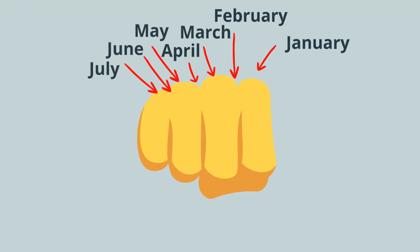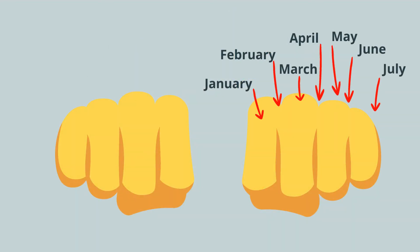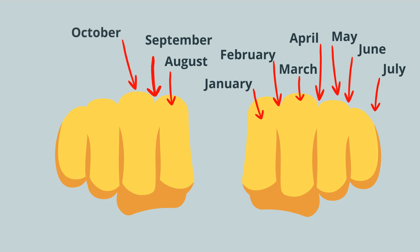For August, you can either start over or you can start on your next hand. So we have August, September, October, November, then December.